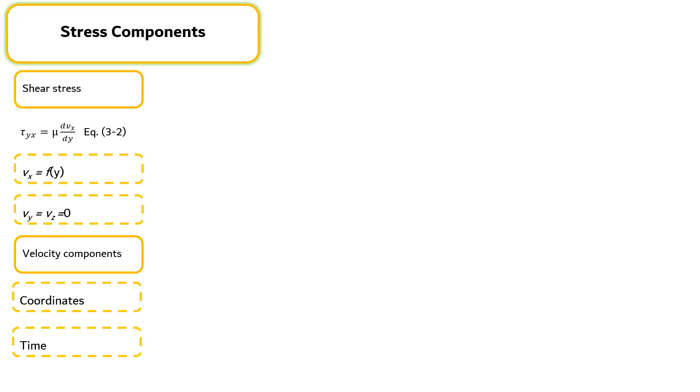Let's consider a very general flow pattern in which the fluid velocity may be in various directions at various places and may depend on the time t. The velocity components are then given by Equation 3-5.